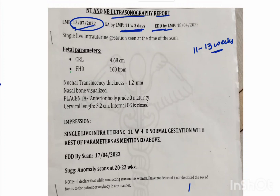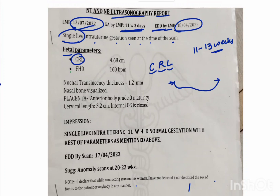The EDD date is calculated according to LMP. Single live intrauterine gestation was seen at the time of the scan — meaning only one baby is present in the uterus. Fetal parameters: the crown rump length, or CRL, is 4.68 cm, which is the main measurement of this scan.